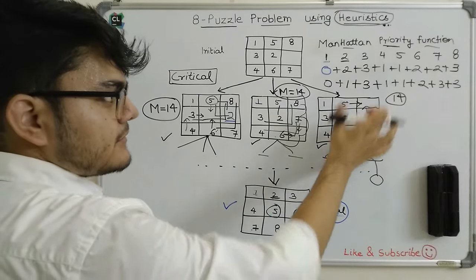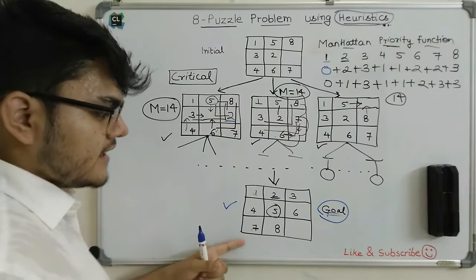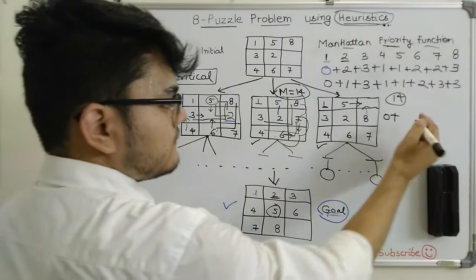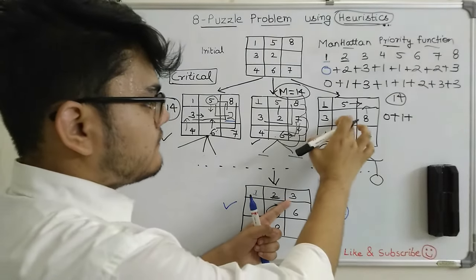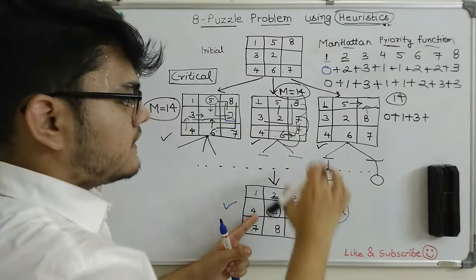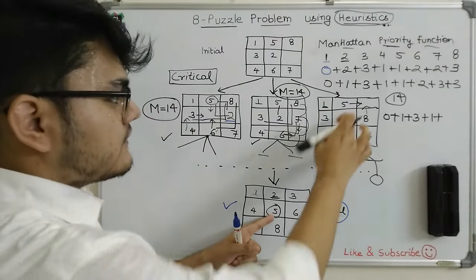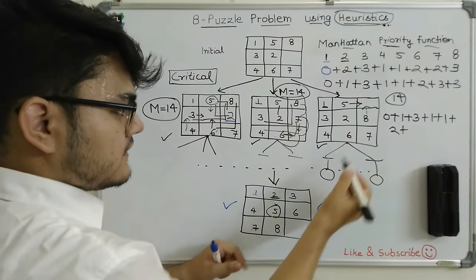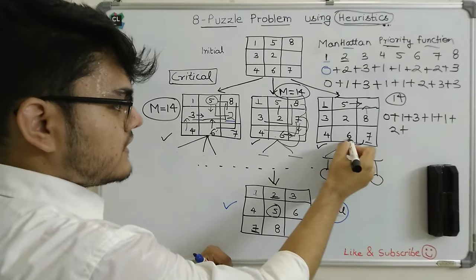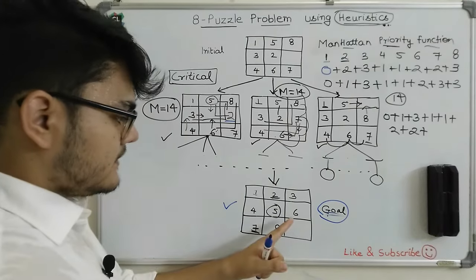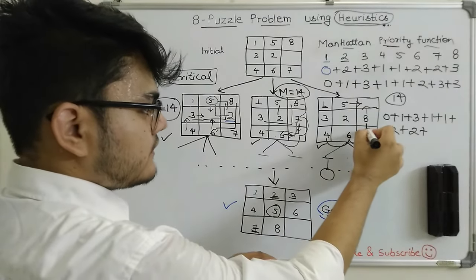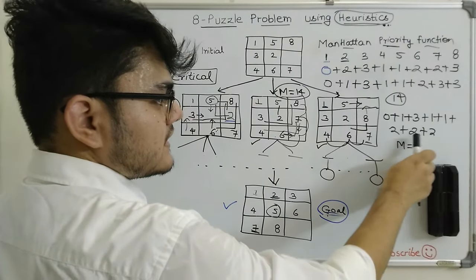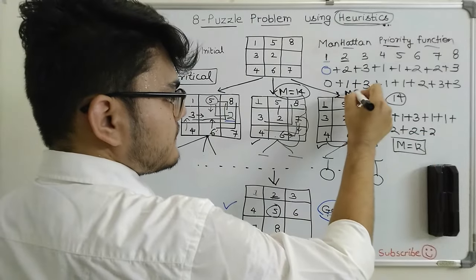Now let's calculate the Manhattan priority function for the third state. For 1: zero movements; for 2: one movement; for 3: three movements; for 4: one movement; for 5: one movement; for 6: two movements; for 7: two movements; for 8: two movements. Adding these: 0 + 1 + 3 + 1 + 1 + 2 + 2 + 2 = 12. So the Manhattan value for this state is 12.